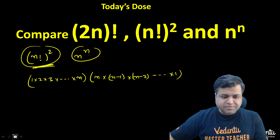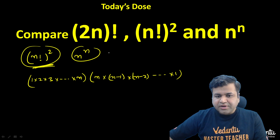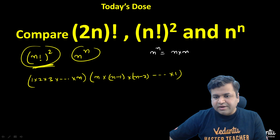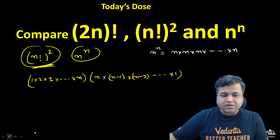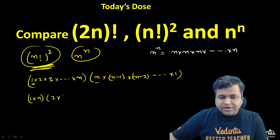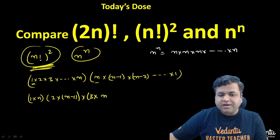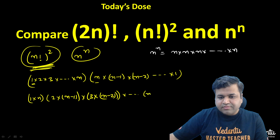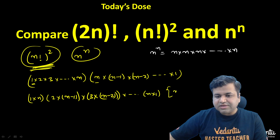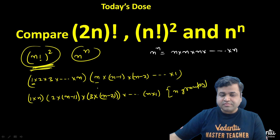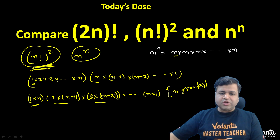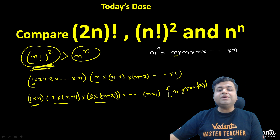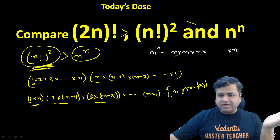Now n raised to the power n I can write as n times n times n times n — n repeated n times. I can pair up the factors of (n!)² into n groups, where each group is of the form n times (n−r+1) paired with r, so that we have n groups total. If I am able to prove that each group is greater than or equal to n, then I will be able to prove that (n!)² ≥ n^n, and hence that will be our relation.